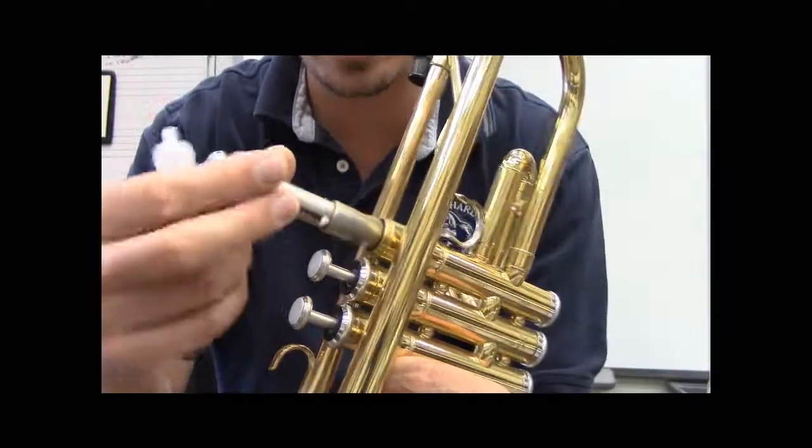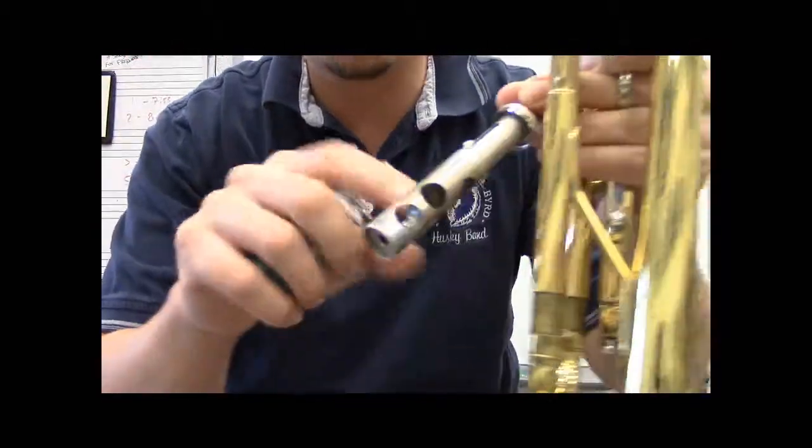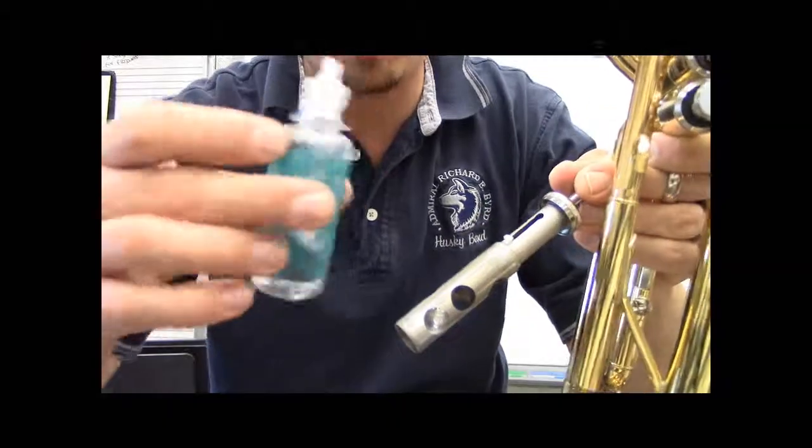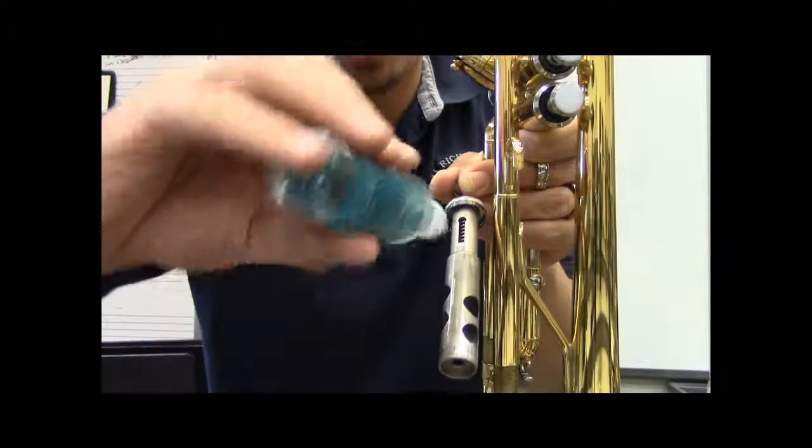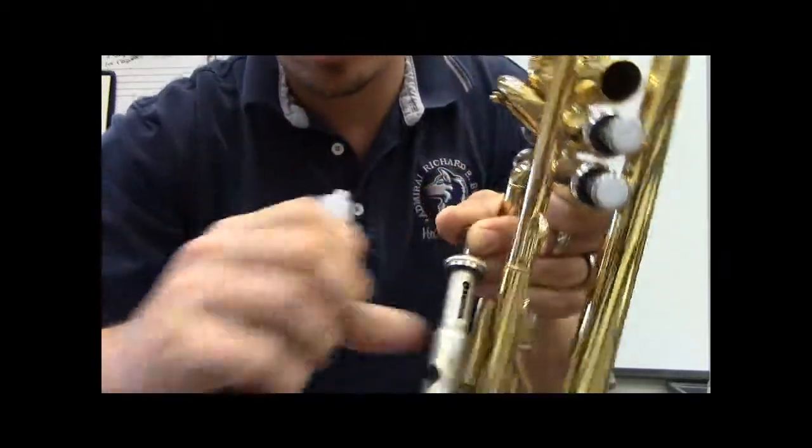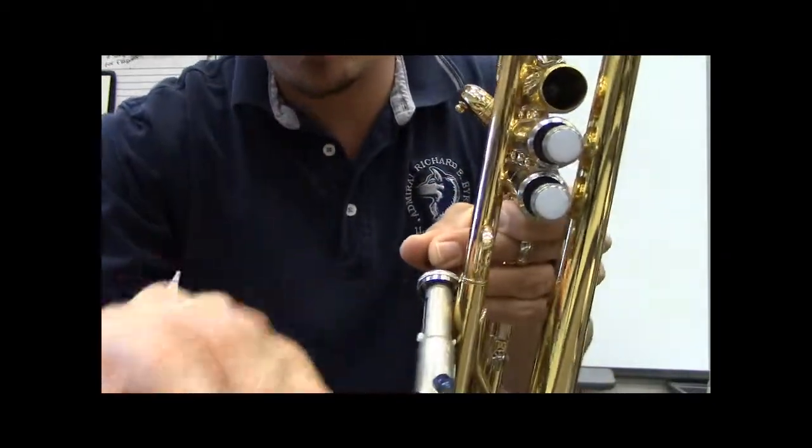There's a spring and a little guide and then the holes on your valve. What you're going to do is take the valve oil and put it down the thick spot of your valve like this. Put a little bit on there, maybe on both sides.